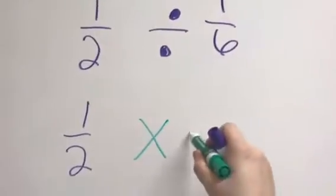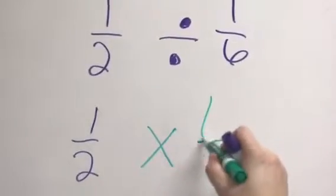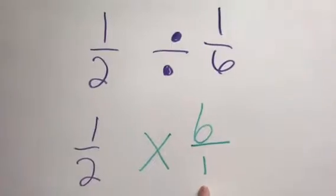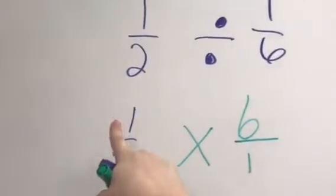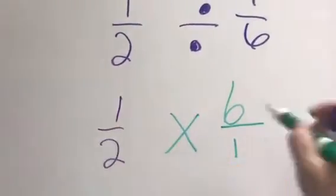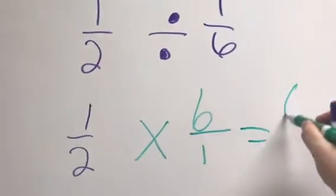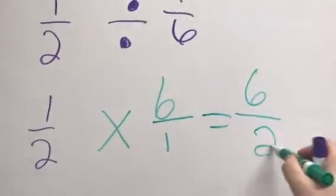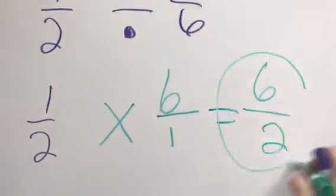So I'm going to put the 1 on the bottom and the 6 on top. So keep, change the sign to multiply, flip the last one, and then just like we multiplied, you multiply straight across, I get 6, multiply straight across the bottom, I get 2. And you can simplify it, but this is okay too.